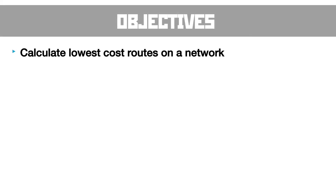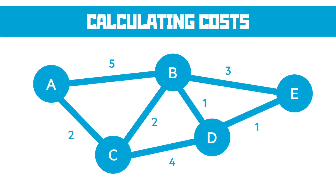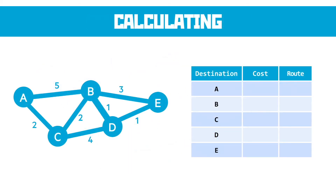Our next objective is to work out the lowest cost route on the network. Usually this is done with a more complicated algorithm, but the only way we've seen it in past paper questions is like this. We'd have a list of destinations and a starting node — in this case node A — and we'd need to work out the cost to get from A to each of the other nodes, also looking for the shortest route. I've started by filling in the cost for A, because to get to A from A it costs nothing, and the route is just through node A. Looking at B, I could go directly from A at a cost of 5, or via C at a cost of 4, which is significantly shorter.